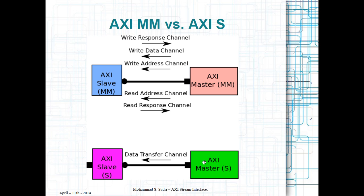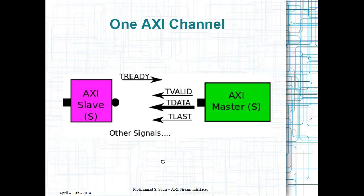But if you look at one AXI streaming connection, which features one AXI stream master and one AXI stream slave with data flowing in just one direction from master to slave, you can see that in terms of signals in the implementation you have practically just one channel — one channel is completely enough to do the data transfer.